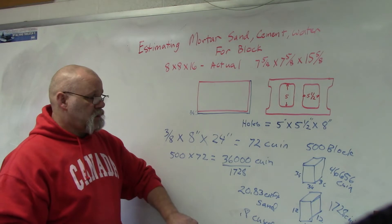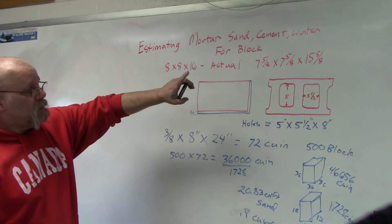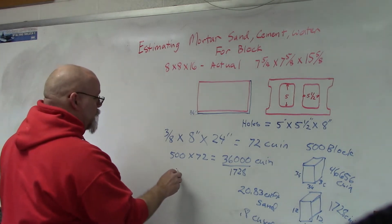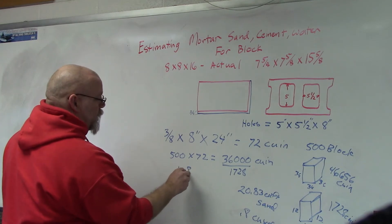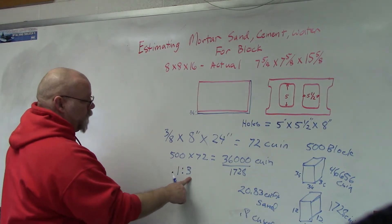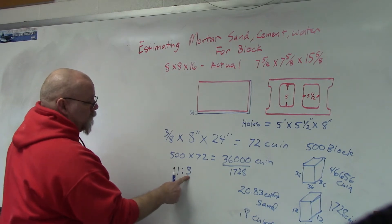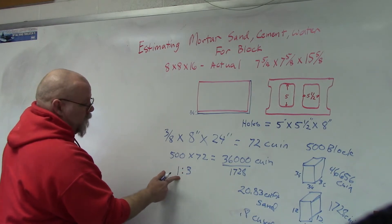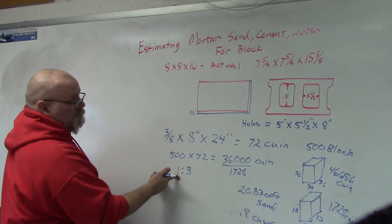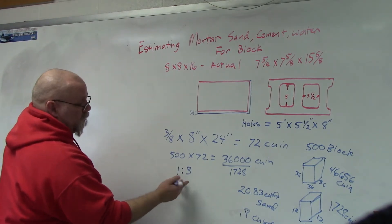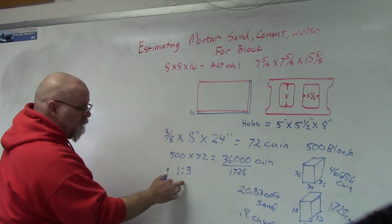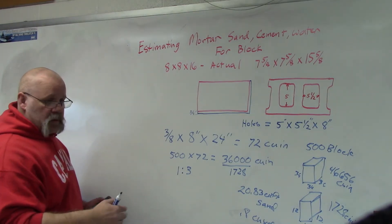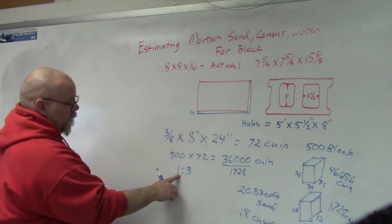Once you've figured out your sand, it's pretty easy to figure out the other two. When you put the mortar, you're generally going to do it in a ratio. If you're doing a load-bearing wall, you're going to go with a ratio of one to three. So if you have three scoops of sand, you're going to use one scoop of cement. You go in the one-to-three ratio.